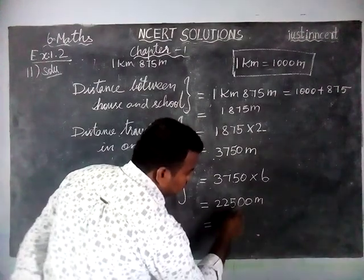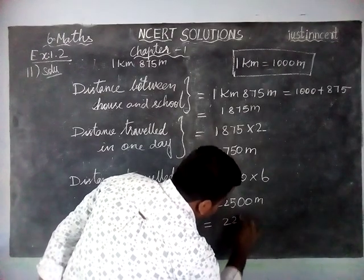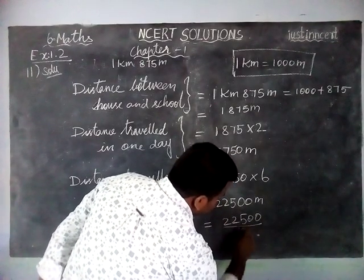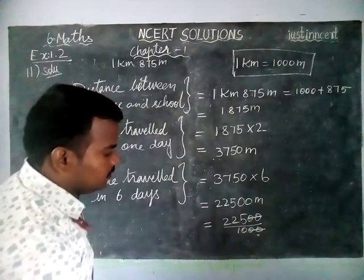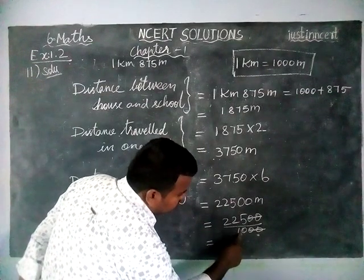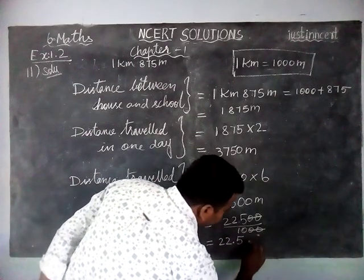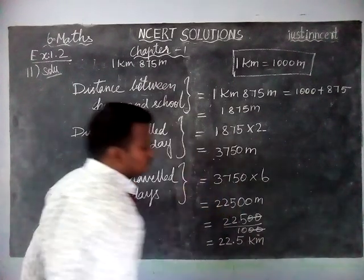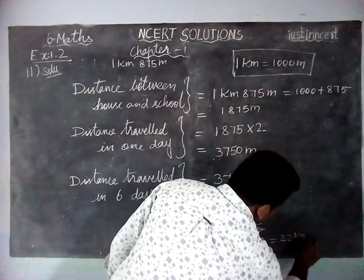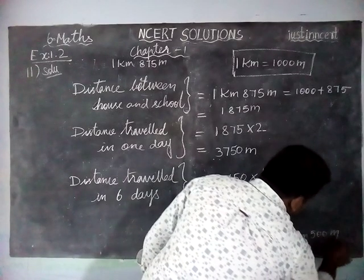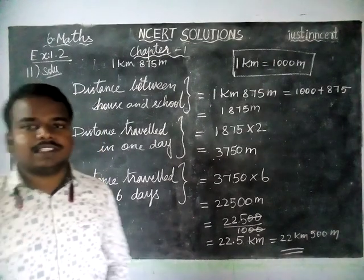Now we have to convert this into kilometers. We have to divide 22500 m by 1000. Dividing, we cancel three zeros, and we place the decimal point one digit from the right, giving us 22.5 kilometers. Otherwise we can write it as 22 kilometers 500 meters. We can write it in any one form. Thank you students, kindly give your suggestions in the comments box.